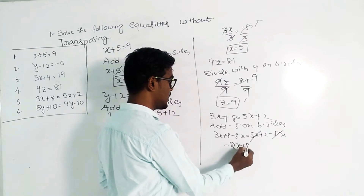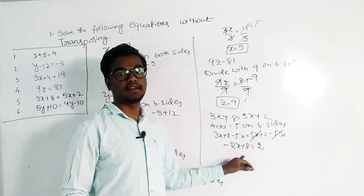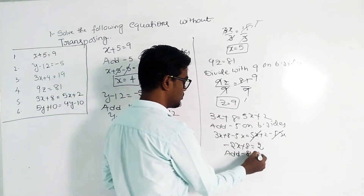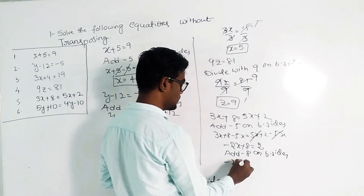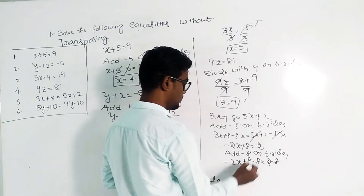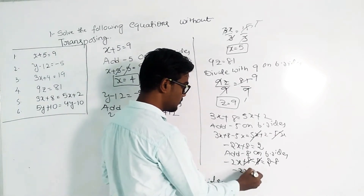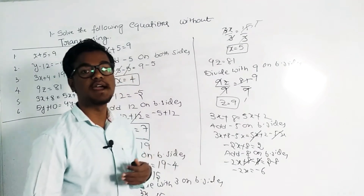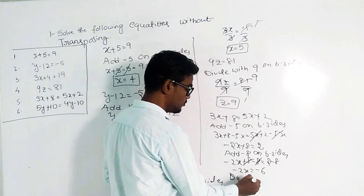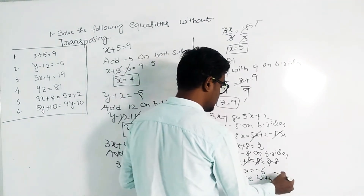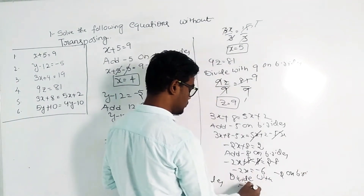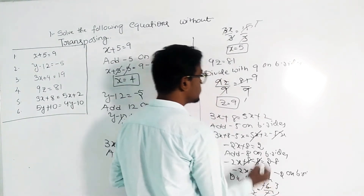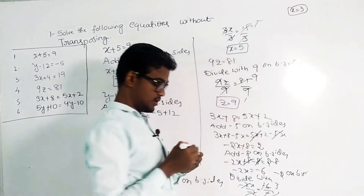This gives minus 2x plus 8 equals 2. Now subtract 8 from both sides: minus 2x plus 8 minus 8 equals 2 minus 8; the 8s cancel, leaving minus 2x equals minus 6. Divide both sides by minus 2: minus 2x divided by minus 2 equals minus 6 divided by minus 2; the negatives cancel and x equals 3.